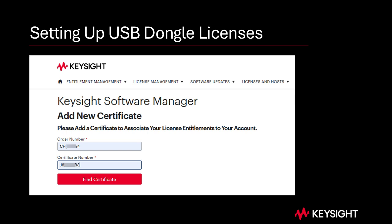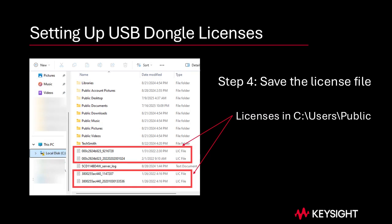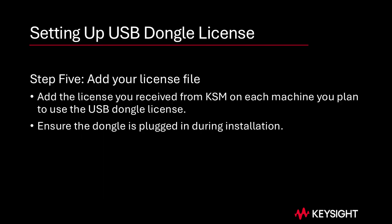Continue following the instructions to request a license file, which you can download or have emailed to you. Step 4: Save the license file. Save a copy of the license file on each machine on which you plan to use the USB portable license, in a location that is readable by all users — for example, on Windows: \users\public.